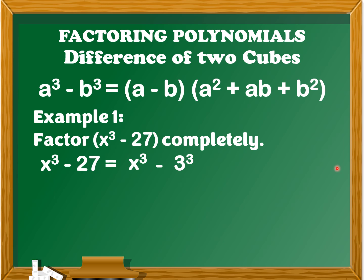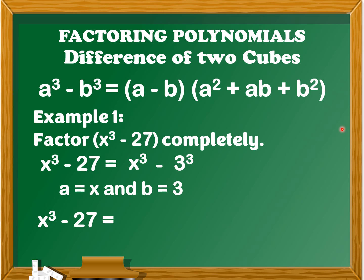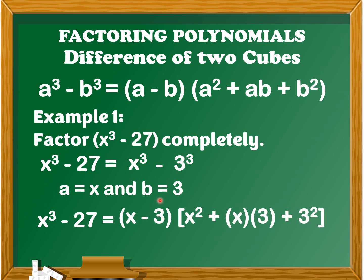Next, we're going to determine the value of a and b. The value of a is x and the value of b is 3. After finding the value of a and b, we're going to determine the value of (a minus b) and (a squared plus ab plus b squared). So we have x cubed minus 27 is equal to (x minus 3) — this is the value of a minus b — and the value of a squared is x squared, plus ab which is x times 3, plus b squared which is 3 squared.